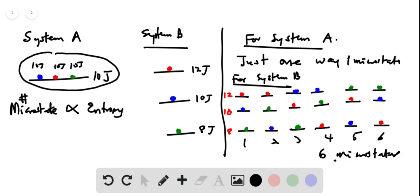So it has higher entropy than system A with just one microstate.